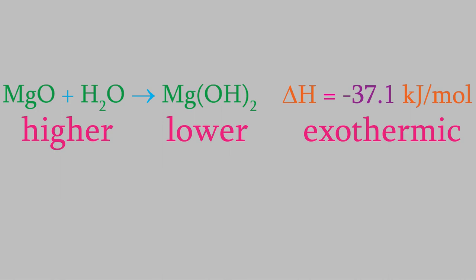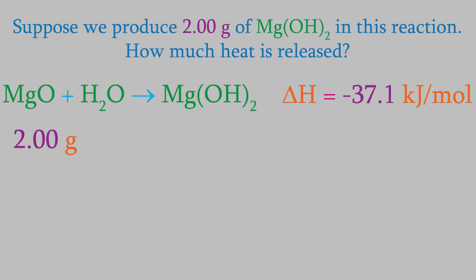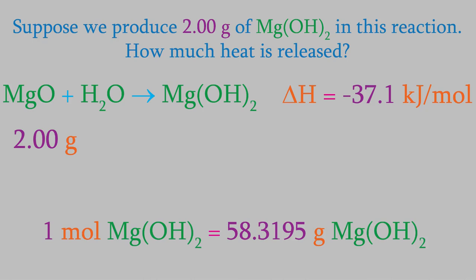What can we do with this information? Suppose we perform the reaction and get 2.00 grams of magnesium hydroxide as our product. How much heat would be released? We'll use the same general method as stoichiometry calculations. The first step is to convert our known quantity into moles. Our known compound is magnesium hydroxide — there are 2.00 grams — so we convert that to moles using masses from the periodic table.